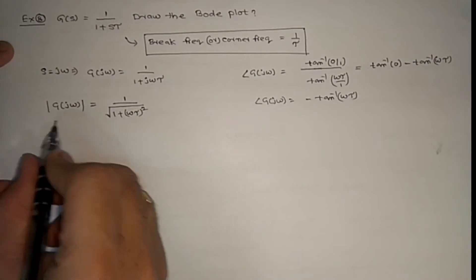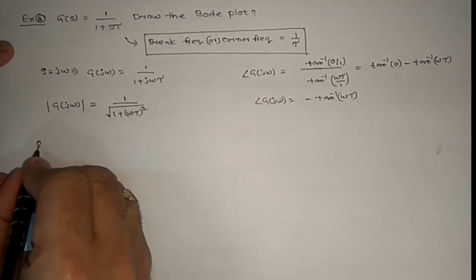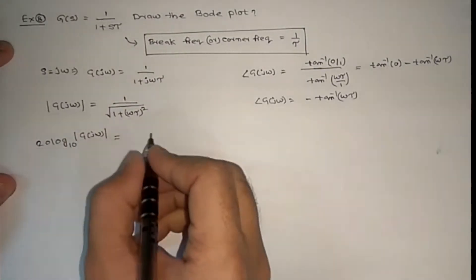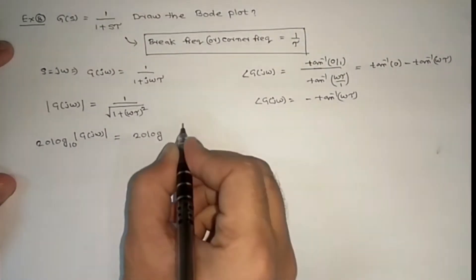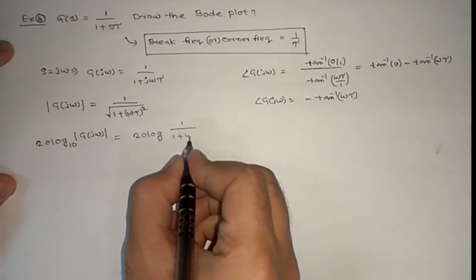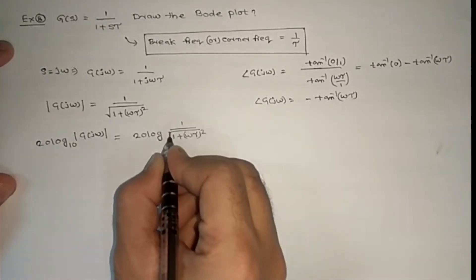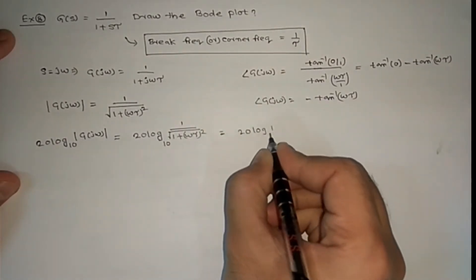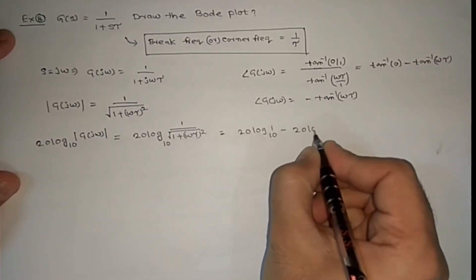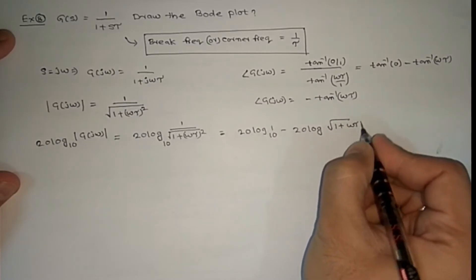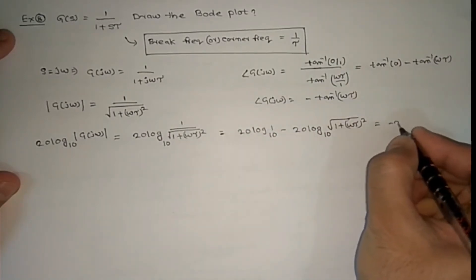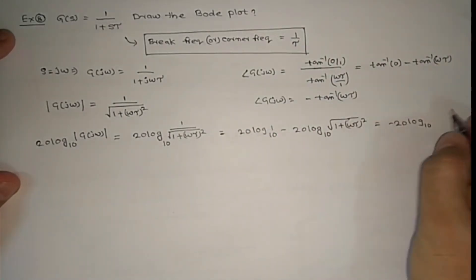For the magnitude plot, apply log to both sides: 20 log |G(jω)| = 20 log [1 / √(1 + (ωτ)²)]. This can be written as 20 log(1) minus 20 log √(1 + (ωτ)²). The first term is 0, so we get minus 20 log √(1 + (ωτ)²) dB.